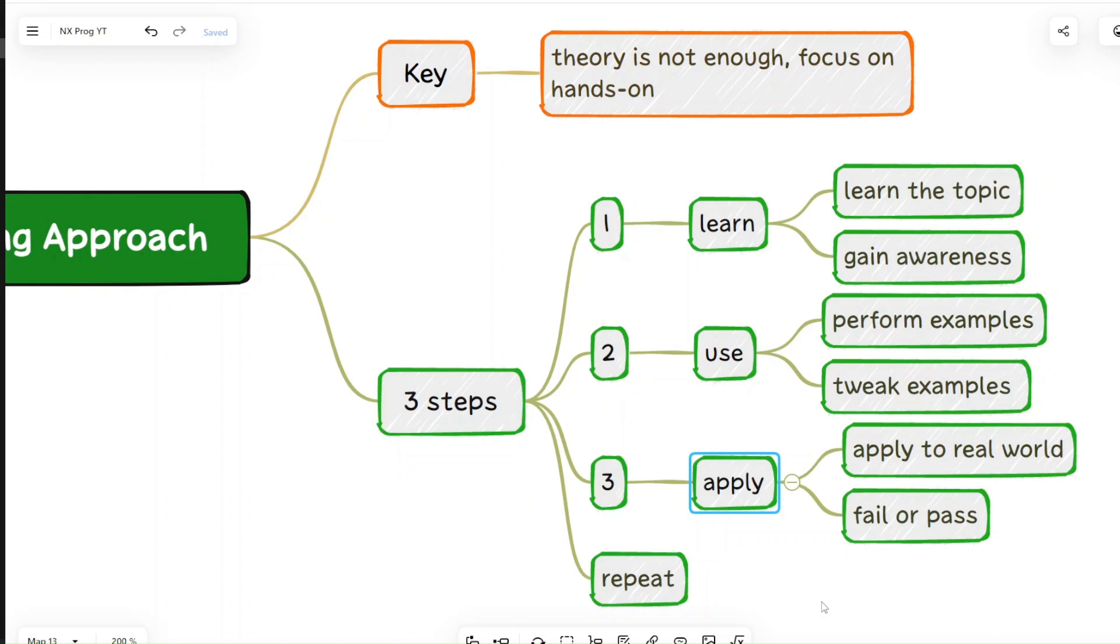Though it is called a learning cycle, it does not just end at the learning stage. There are three stages involved: first is learning, second is using, third is applying, and repeating the three steps again.